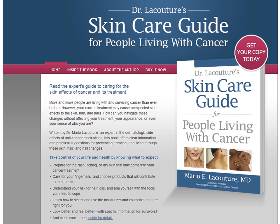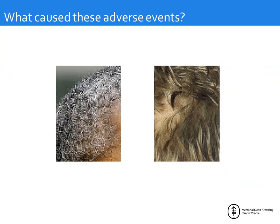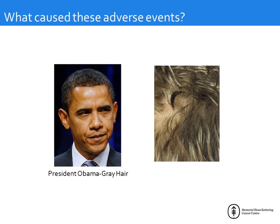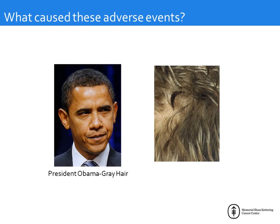We wrote a book with Harborside Press for patients that covers some of the things discussed today. And if I've accomplished my mission, you can now explain what caused the hair changes shown — on the left, President Obama's hair going gray after taking office, and on the right, a patient receiving sunitinib experiencing periodic re-pigmentation. I think President Obama shows us that it's important to think about changing the skin of your patients. Thank you very much.